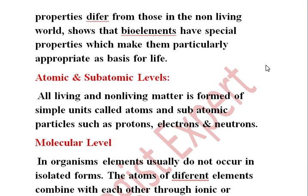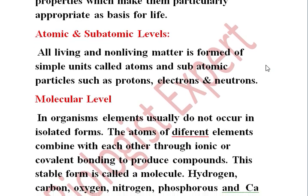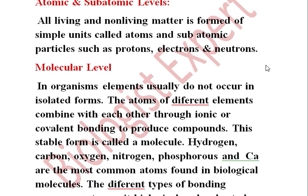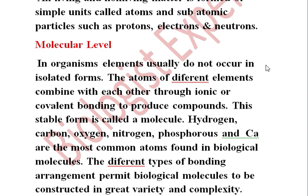The next level is the molecular level. Elements usually do not occur in isolated form. The atoms of different elements combine with each other through bonding and produce a compound — this compound or molecule is called a molecule. For example, hydrogen, carbon dioxide, oxygen, and nitrogen — these are all elements that combine with each other to form molecules.